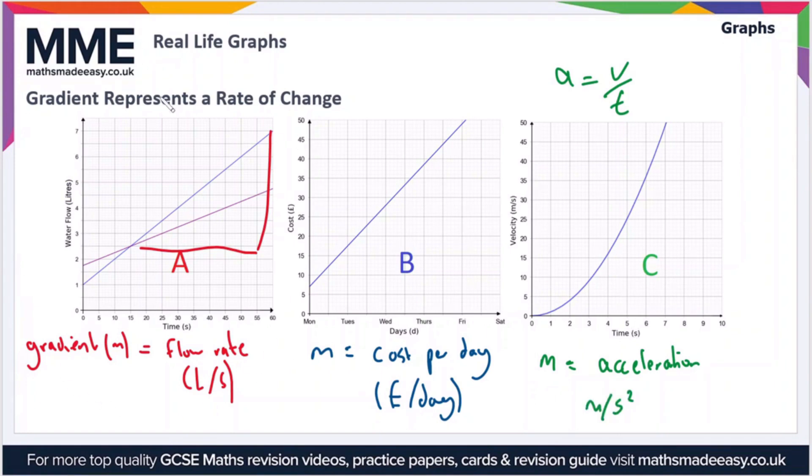So as we've said before, the gradient represents a rate of change when we've got time on the x-axis. So we could say that in A, the gradient represents the rate of change of water flow. In B, the gradient represents the rate of change of price. And in C, the gradient represents the rate of change of velocity, which is also known as acceleration.